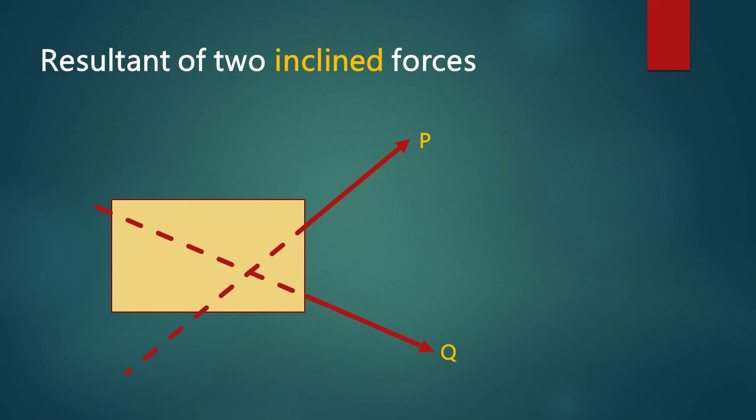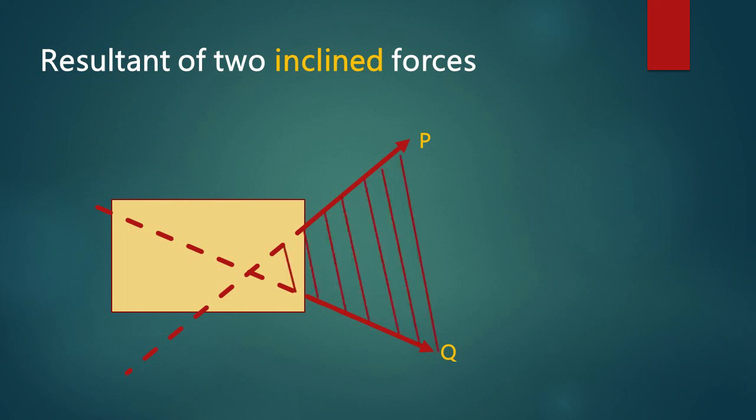Our final topic in this lesson is the resultant of two inclined forces. According to this example, forces P and Q are inclined to one another. When we apply two forces in this way, the object doesn't move in either the direction of P or Q. The resultant of P and Q lies between the two forces.